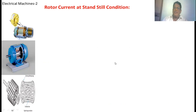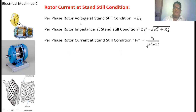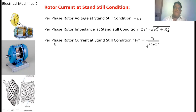How do you find the rotor current at a standstill? The per phase rotor voltage at a standstill condition is equal to E2. The per phase rotor impedance at standstill Z2 equals the square root of Rr squared plus X2 squared, where Rr is the per phase rotor resistance and X2 is the per phase rotor leakage reactance at standstill. The per phase rotor current at standstill I2 equals E2 divided by the square root of Rr squared plus X2 squared.